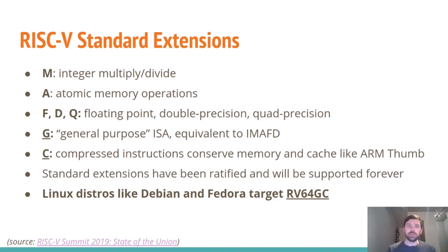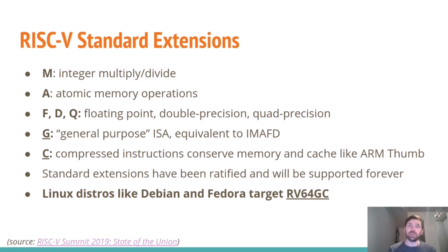RISC-V standard extensions include M for multiply and divide, A for atomic, F, D, and Q for different precisions of floating point, and G for general purpose — which combines the integer, multiply, atomic, float, and double-float extensions. There's also C for compressed instructions to conserve memory and cache, similar to ARM Thumb. These standard extensions have been ratified and will be supported forever by any conforming RISC-V processor. Linux distros like Debian and Fedora are targeting RV64GC, so if you want a processor supported by Linux distros, look for RV64GC.